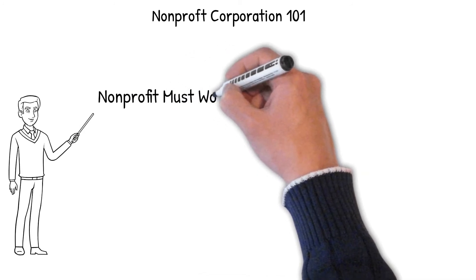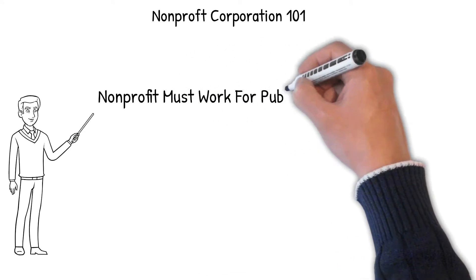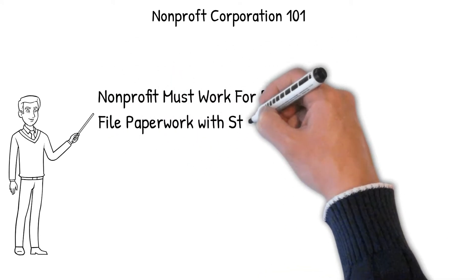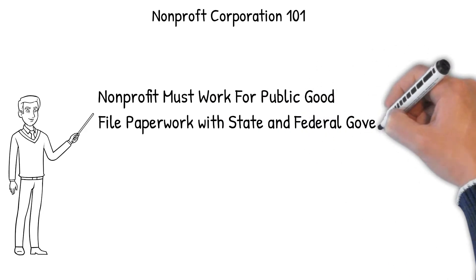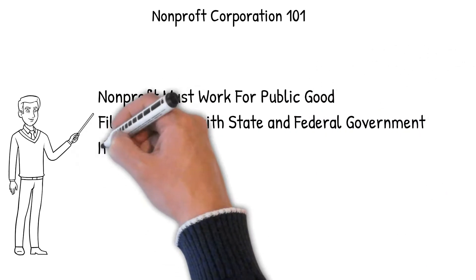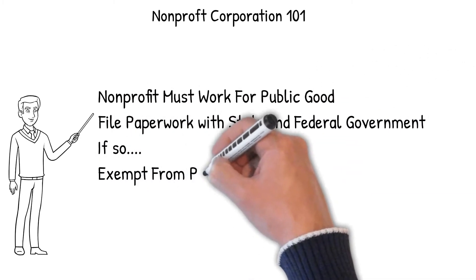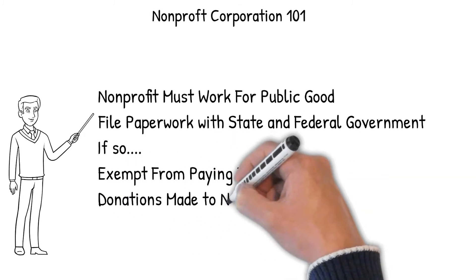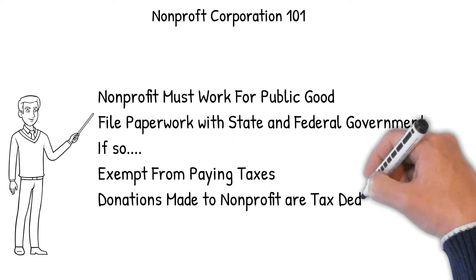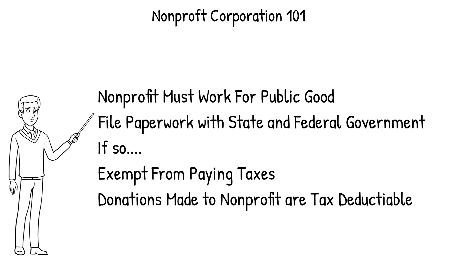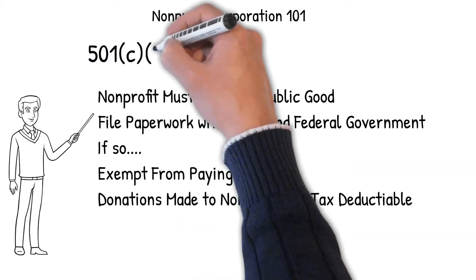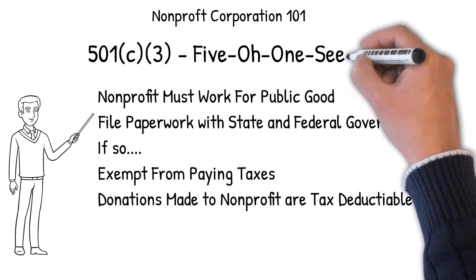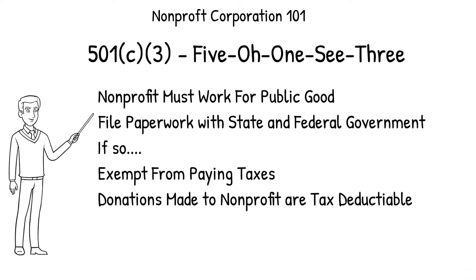When it comes to a nonprofit corporation, taxation is a big benefit. A nonprofit corporation is an organization whose mission is to serve the public interest and that has filed incorporation papers with the state. Because the nonprofit corporation works for the public good, it's exempt from paying state and federal taxes. Additionally, donations made to a nonprofit are tax deductible for the donor — this IRS status is called a 501(c)3.